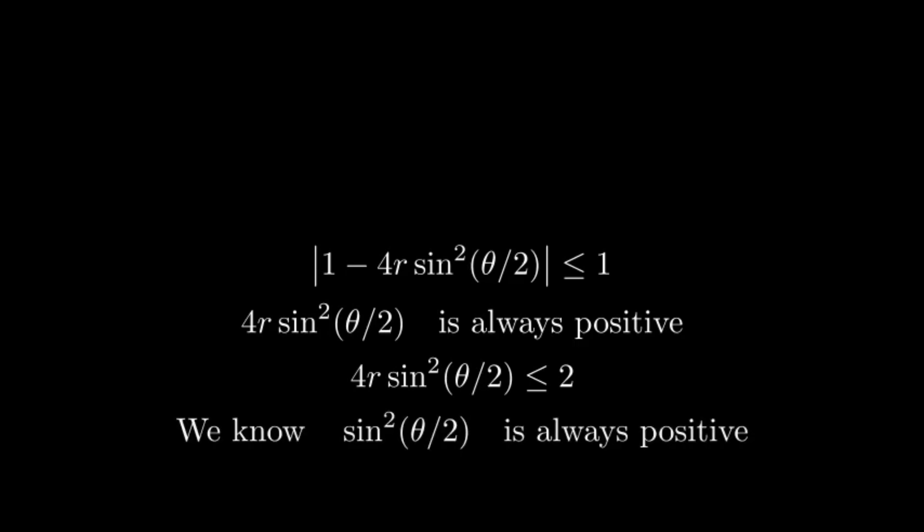So the error equation is shown. We know the square of sine is always positive, so this term is always positive. The condition for stability can be written as shown. The maximum value of the square of the sine term is positive, so the condition for stability is the diffusion number should be less than 0.5.